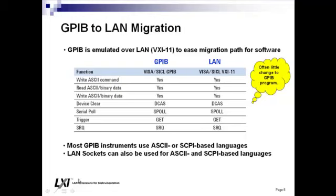Most GPIB instruments use ASCII or SCPI-based language, and because of that they can also use LAN sockets to send those commands and read data — either ASCII or binary — back from the instrument. If you're not hung up on needing serial poll or SRQ capabilities, LAN socket communication gives you maximum speed, and there's often very little change required to your existing GPIB program.